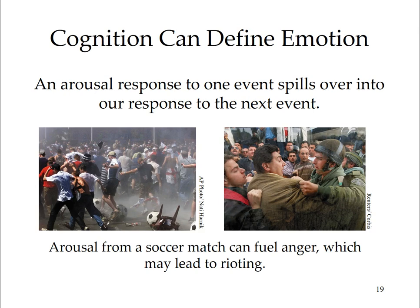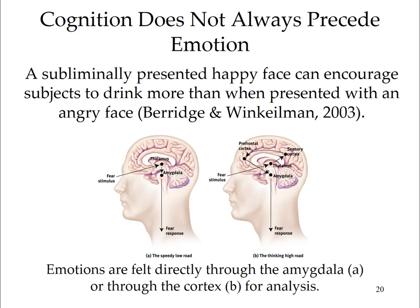The spillover effect occurs when arousal from one event affects our response to other events. Dozens of experiments show that a stirred-up state can be experienced as different emotions depending on how we label it — arousal fuels emotions, and cognition channels it. An arousal response to one event spills over into our response to the next; for example, arousal from a soccer match can fuel anger, which may then lead to rioting. Cognition does not always precede emotion — a subliminally presented happy face can encourage subjects to drink more, compared to an angry face. Emotions are felt directly through the amygdala or through the cortex.